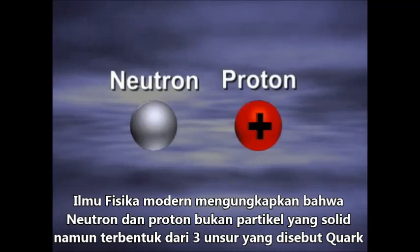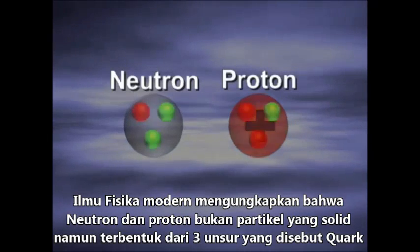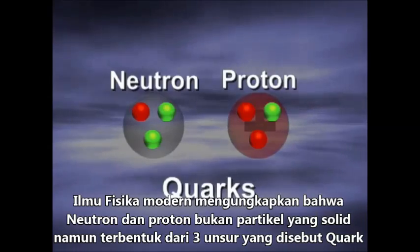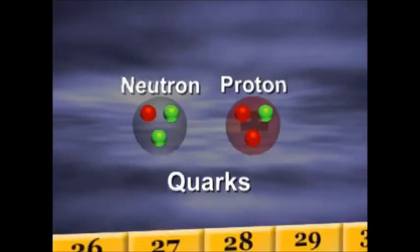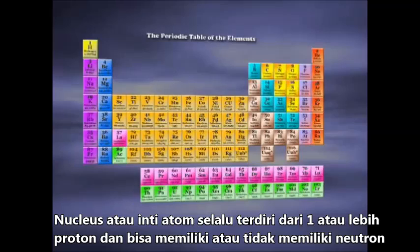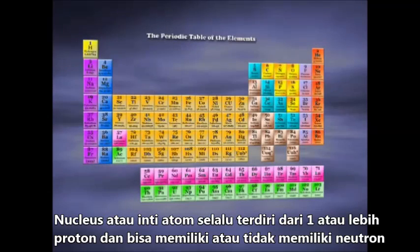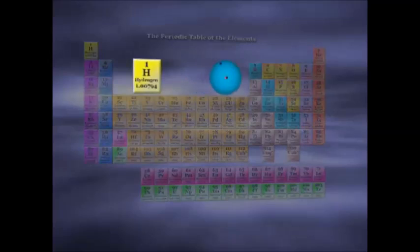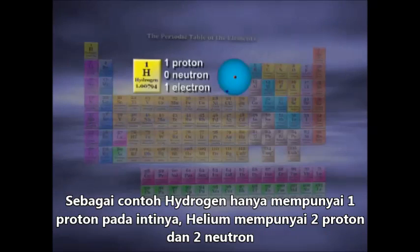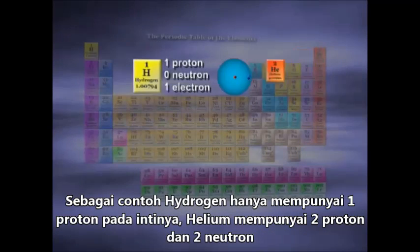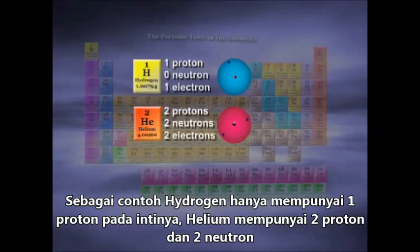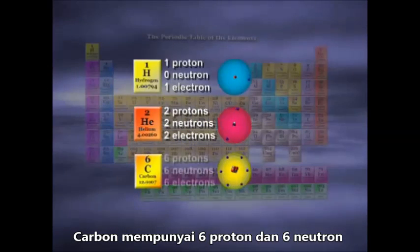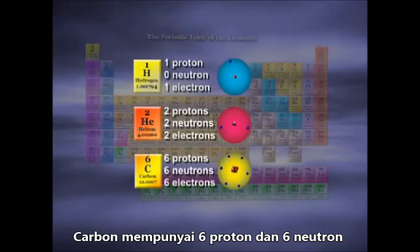Modern physics has shown us that neutrons and protons are not solid particles, but rather made up of three subparticles called quarks. The nucleus always contains one or more protons, and may or may not contain neutrons. For example, hydrogen has only one proton in the nucleus. Helium has two protons and two neutrons, and carbon has six protons and six neutrons.